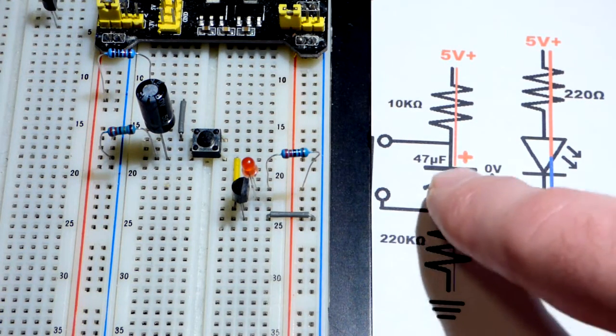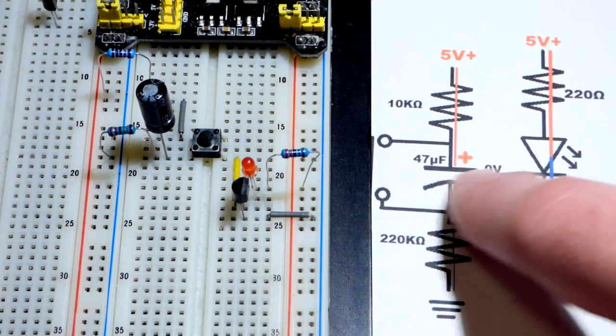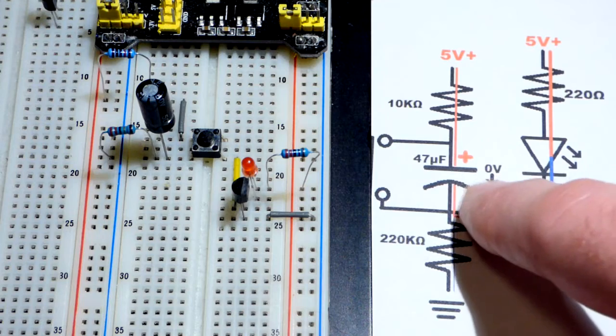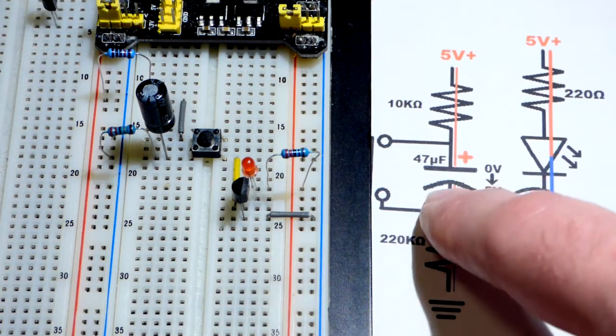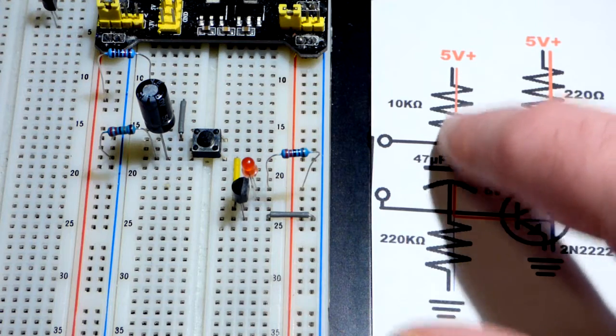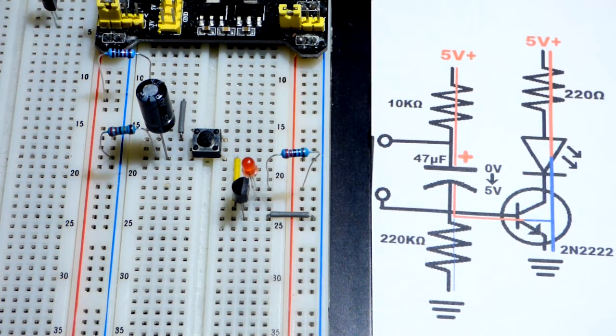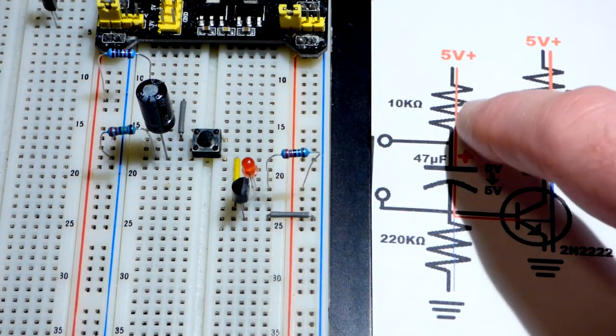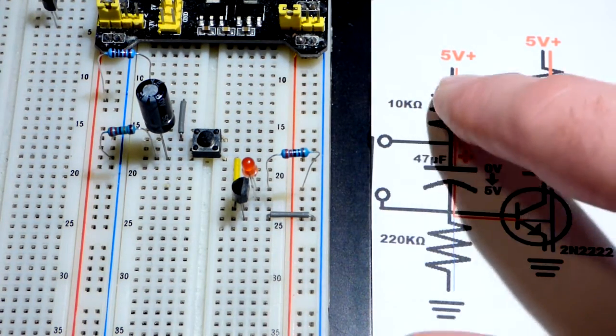So it starts off at 0 volts. Once it has 1 volt across it, there's only 4 volts across the resistor. Once there's 2 volts across the capacitor, then we only have 3 volts across the resistor.